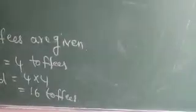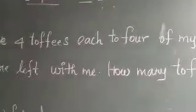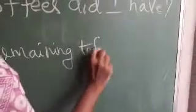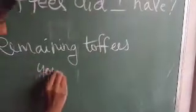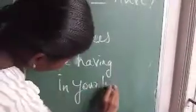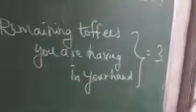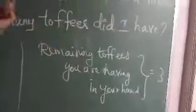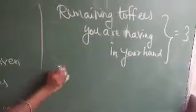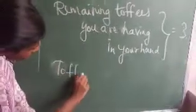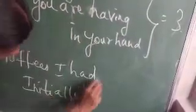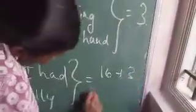Now remaining toffees in hand: 3. So the question is how many toffees did I have initially? You simply add 16 and 3. Total is 19 toffees. Remaining toffees plus toffees given to friends equals toffees I had initially. So 16 plus 3 equals 19 toffees initially.